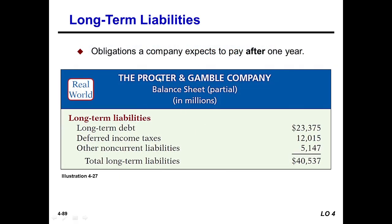Long-term liabilities are obligations that a company expects to pay after one year. Examples include long-term debt, deferred income taxes, and other non-current liabilities. Total long-term liabilities are 40,537.